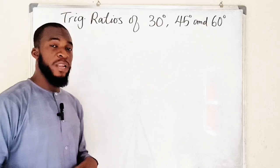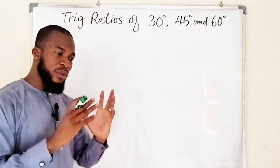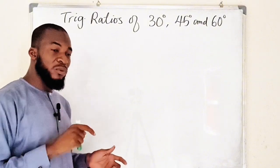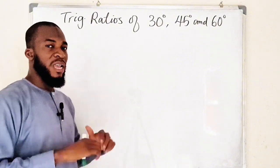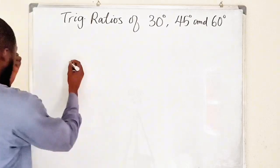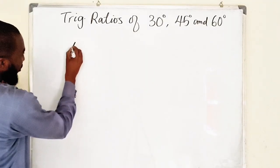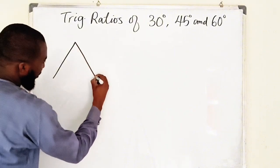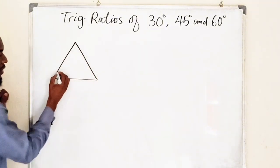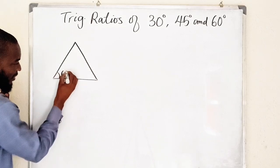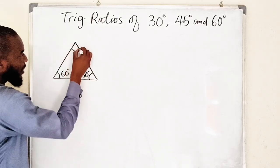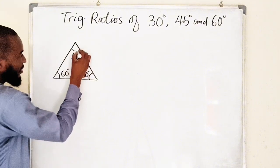I would like to start with 30 and 60 degrees, and to do that I need an equilateral triangle. Remember, an equilateral triangle has all its interior angles equal — all three interior angles are 60 degrees each. And the side lengths are also equal. So suppose we have an equilateral triangle like this.